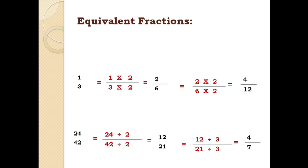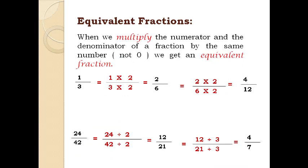Equivalent fractions can be found by two ways. First, when we multiply the numerator and the denominator of a fraction by the same number (not 0), we get an equivalent fraction. For example, 1 over 3 multiplied by 2 gives 2 over 6, and multiplied by 4 gives 4 over 12.